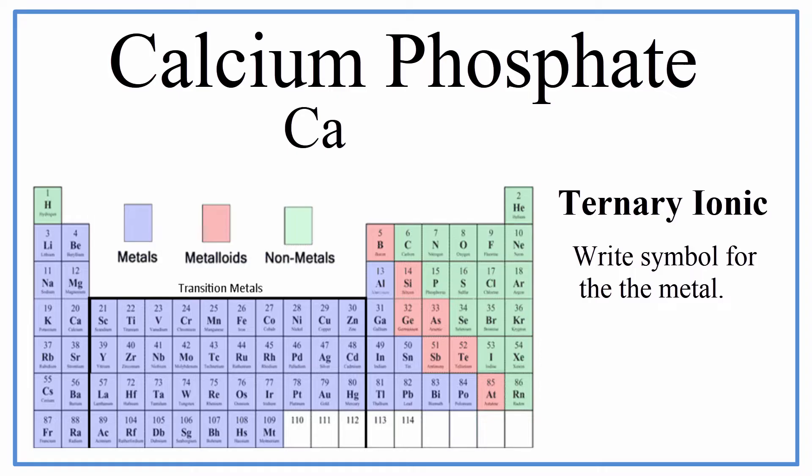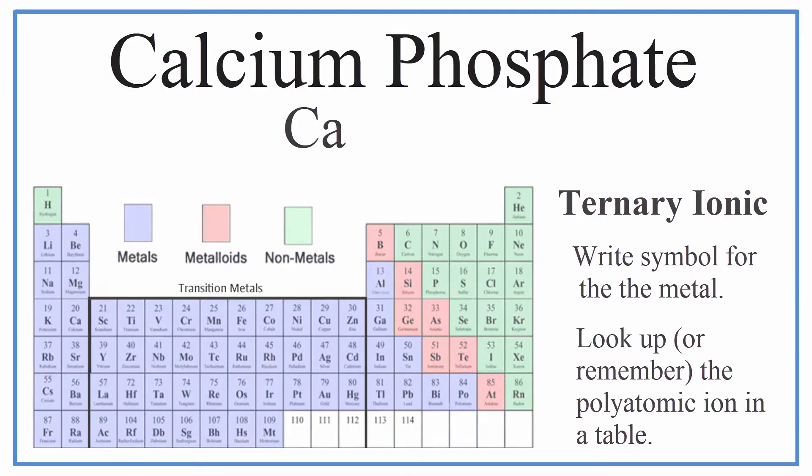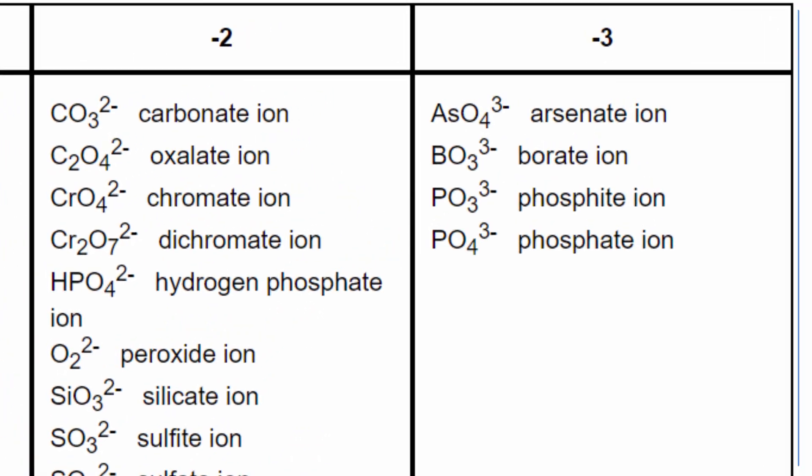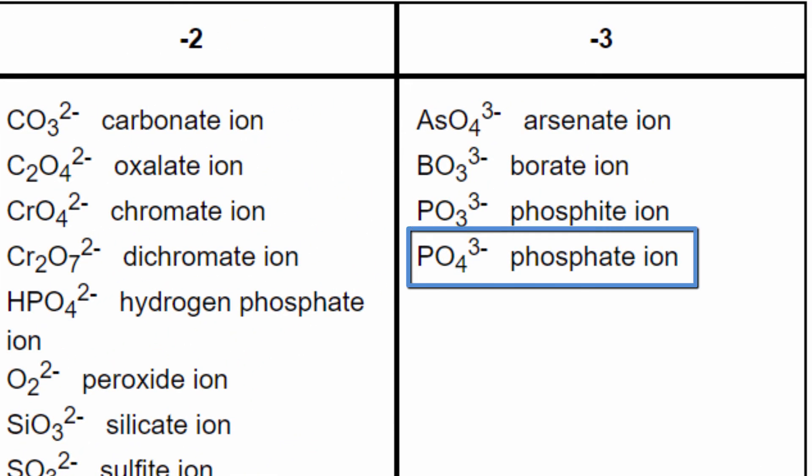Then for the phosphate, that doesn't appear on the periodic table. We need to look that up in a table of polyatomic ions. Often you'll be given this table of common ions to work with. We can see in the third column, the one with negative three, we have the phosphate ion and it's PO4 three minus.